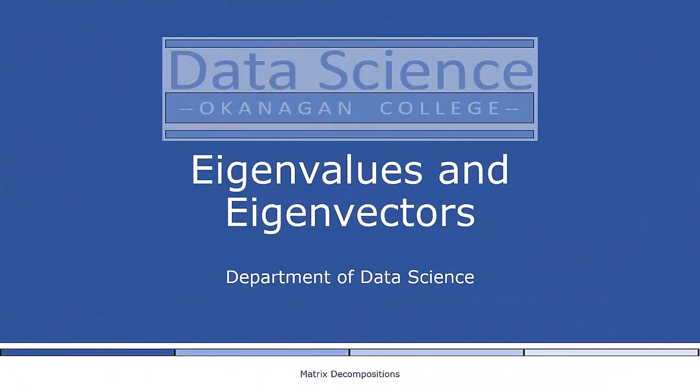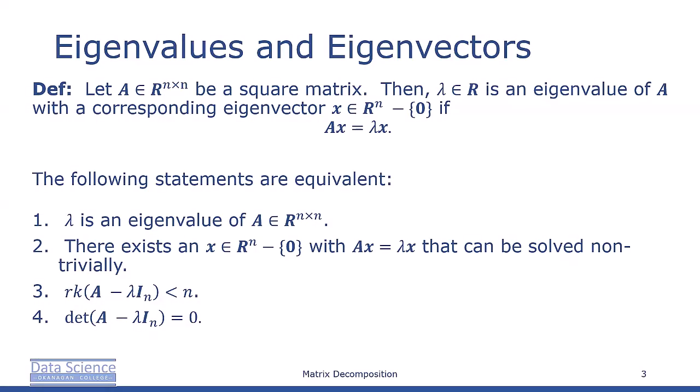Recall that every linear mapping has a unique transformation matrix given an ordered basis. We can interpret linear mappings and their associated transformation matrices as performing an eigenanalysis. The eigenvalues of a linear mapping will tell us how a special set of vectors — the eigenvectors — are transformed by the linear mapping. Let A be a square matrix. Then a real number lambda is called an eigenvalue of A with a corresponding eigenvector x of length n, if Ax equals lambda x for some value lambda in R.